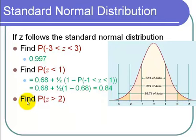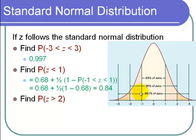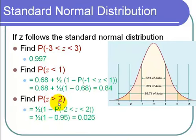The next question is to find the probability that z is greater than 2. This is the area to the right of 2. We know the area between negative 2 and 2 is 0.95. The area outside this middle part is 1 minus 0.95 by the rule of complements. The area to just the right is one-half of that: one-half times (1 minus 0.95), which gives 0.025.